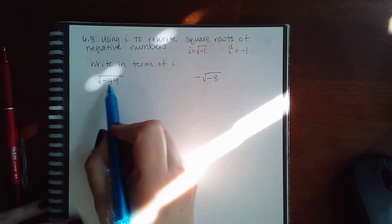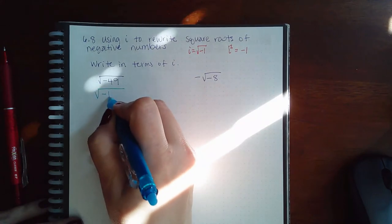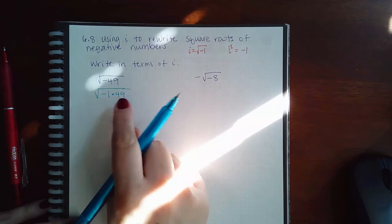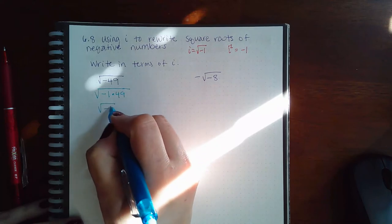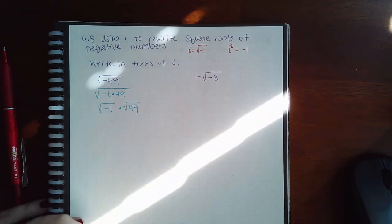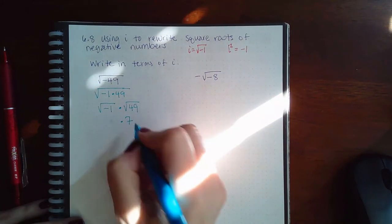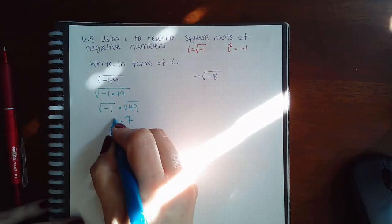So what that means is that when you're taking an expression like this, you can rewrite it as negative one times forty nine. And because negative one and forty nine are both real numbers, you can separate it into the square root of negative one and the square root of forty nine. And then the square root of forty nine we know is seven, and by definition we know that the square root of negative one is i.